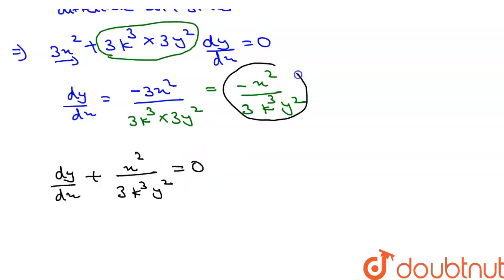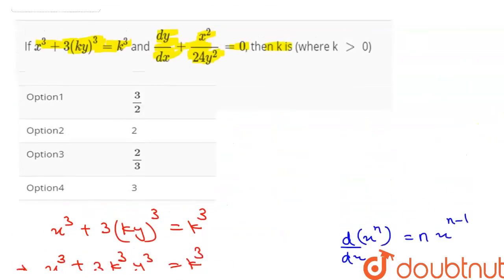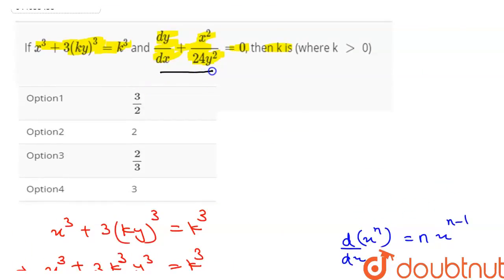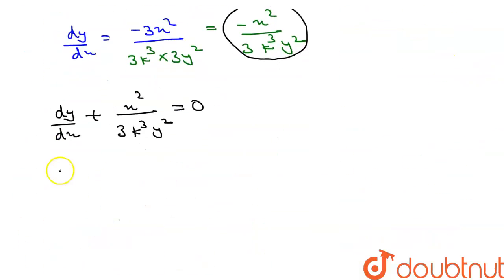Basically we have to transfer this whole term into left hand side. And in the question it is given that dy by dx plus x square divided by 24 y square. So we can write as dy by dx plus x square divided by 24 y square, this equal to 0.